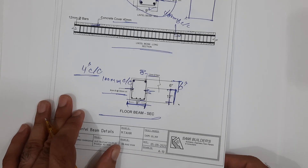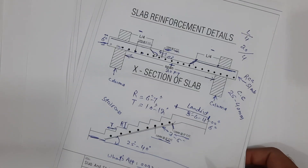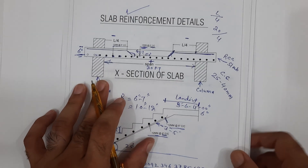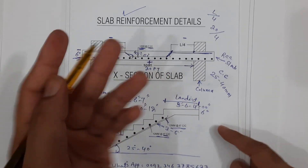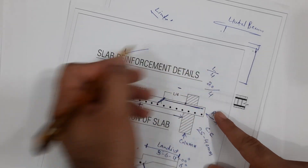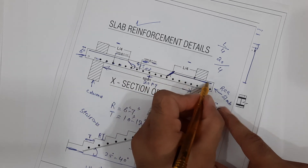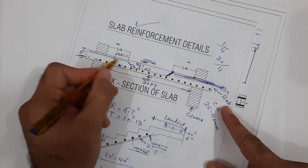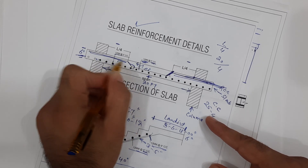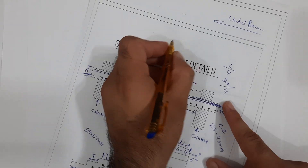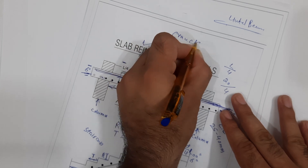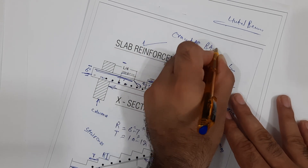You can see the slab reinforcement details and make a screenshot for the RCC slab. You can also see the crank bar placement. In place of the crank bar, you can use extra steel rods. Here we don't provide the crank, so instead we provide extra steel rods at this location. The extra steel rods you can keep up to the distance of L/4.